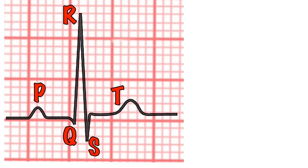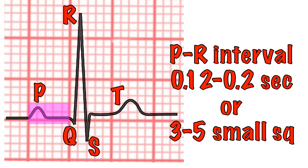The gap between the start of the P wave and the start of the QRS complex is known as the PR interval and should take between 0.12 and 0.2 seconds or 3 to 5 small squares on the ECG.